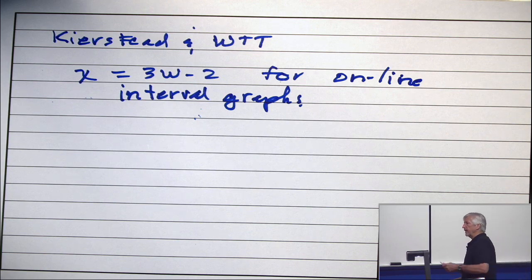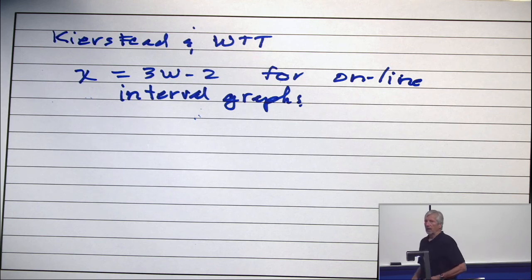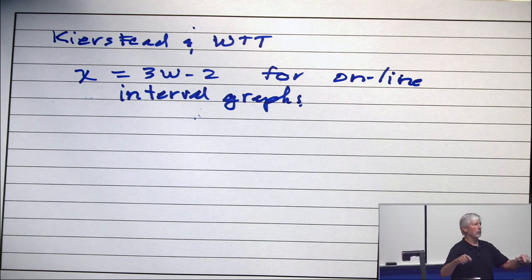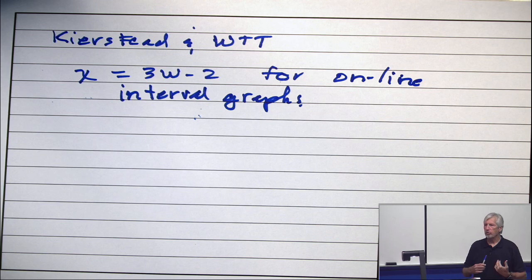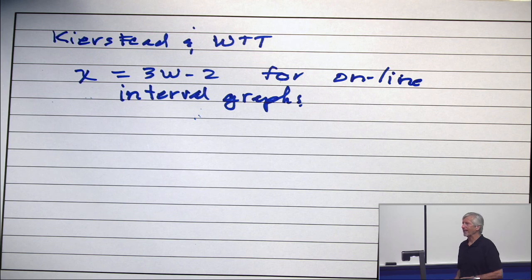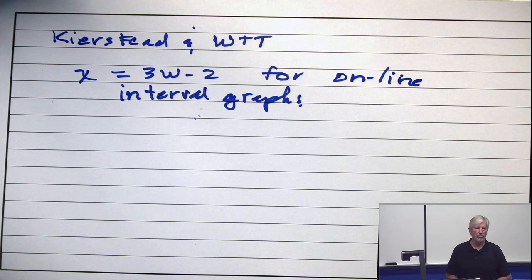But it's exact in the sense that I don't care what algorithm you use, what supercomputer, what oracle. I have a simple strategy for building an interval graph that will force you to use at least three omega minus two. So it's achievable and it's best possible.